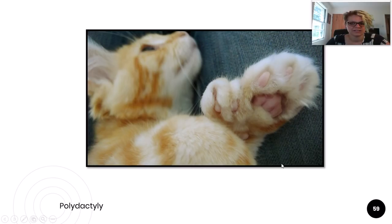Polydactyly is an interesting condition characterized by extra toes. If you can see this kitty here has what appears to be a double dewclaw. It is most common in cats, but it can happen in other species.